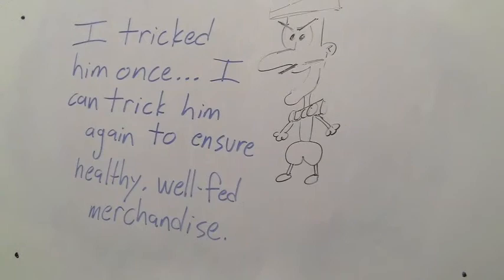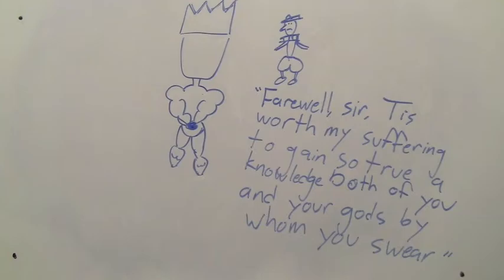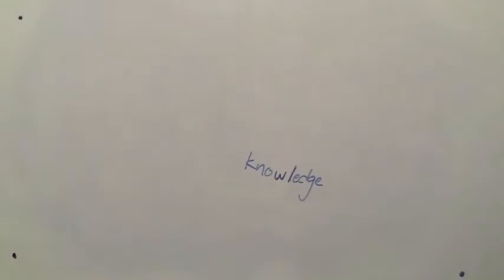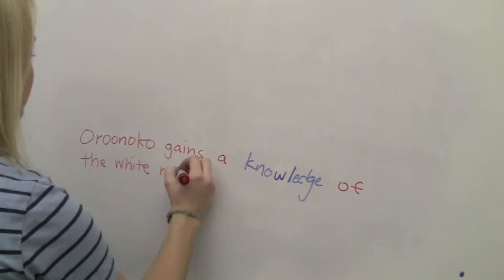Having been deceived twice already, Oronoko declares, Farewell, sir. Tis worth my suffering to gain so true a knowledge, both of you and your gods by whom you swear. Oh, burn! Now, this idea of knowledge, we see that Oronoko gains a knowledge of the white man, and more importantly, his inability to be trusted. He doesn't trust the white man's sense, nor his reason.